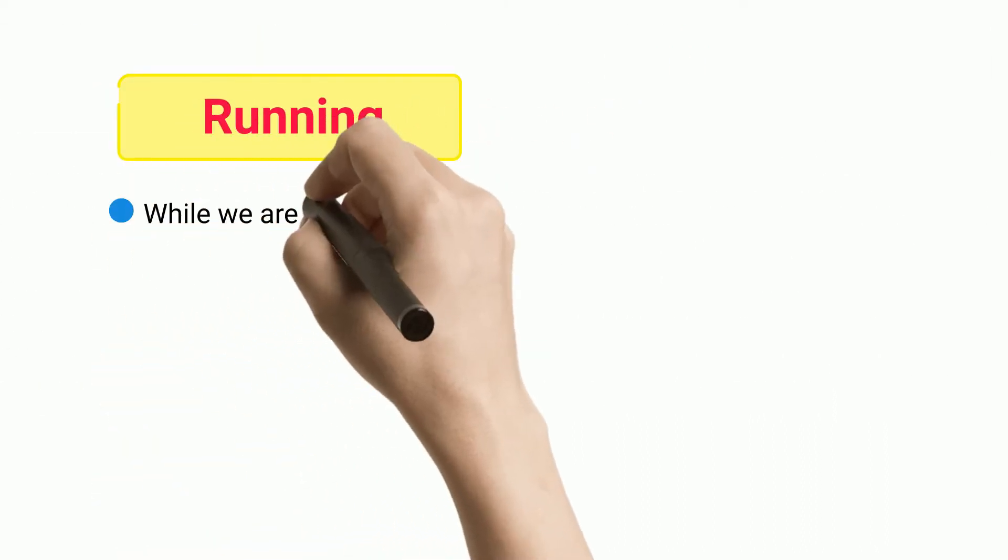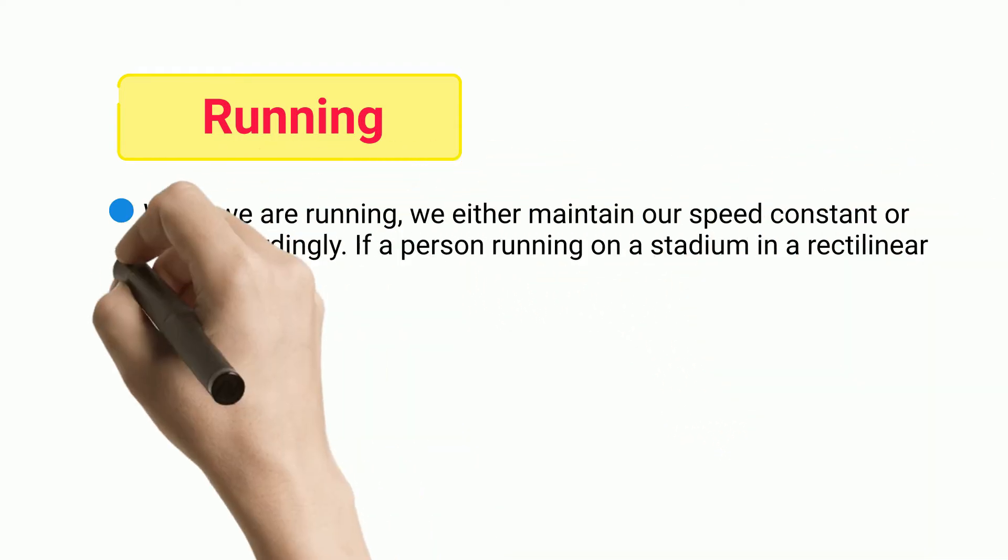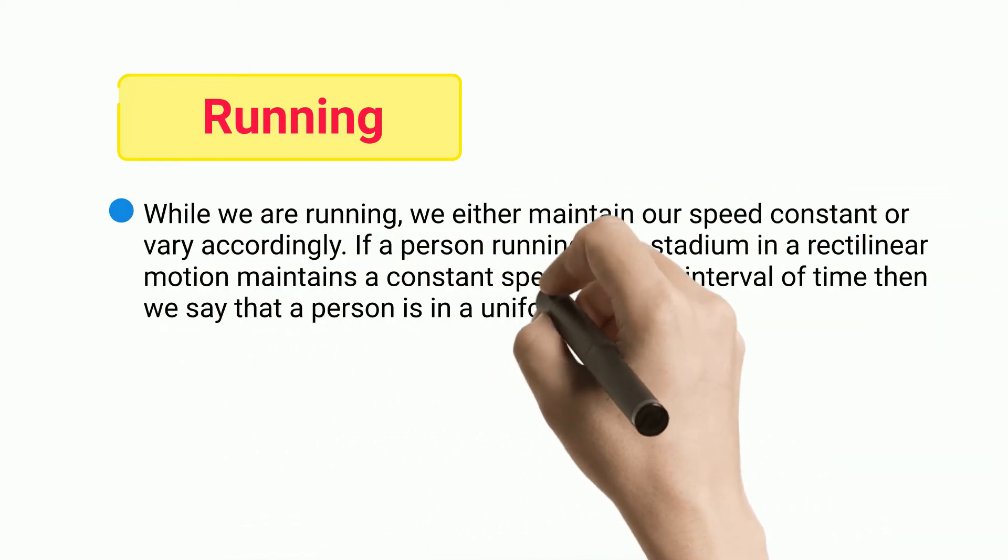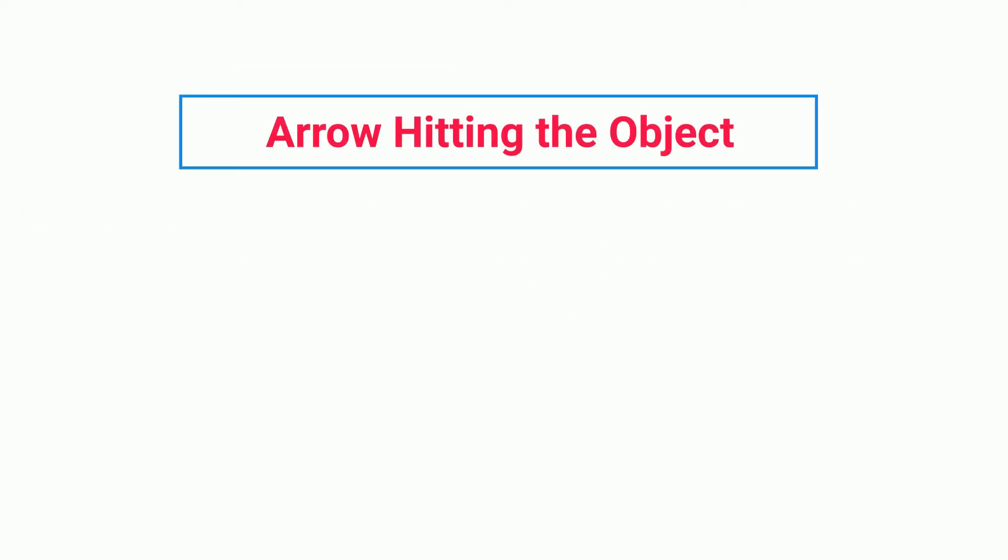Running: While we are running, we either maintain our speed constant or vary accordingly. If a person running on a stadium in a rectilinear motion maintains a constant speed at every interval of time, then we say that a person is in a uniform rectilinear motion.